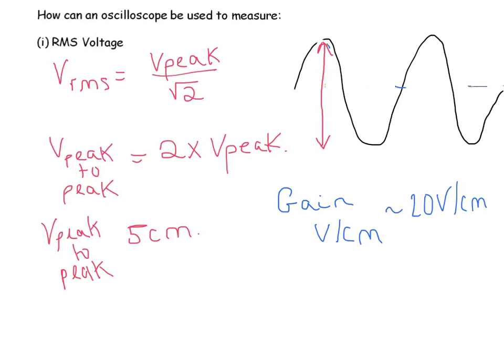But sometimes you might see it written differently, so you might see it in volts per division. Because on an oscilloscope what you'll see on the screen is there are a series of squares and each one of those squares is a division. So a typical one might be 20 volts per division.